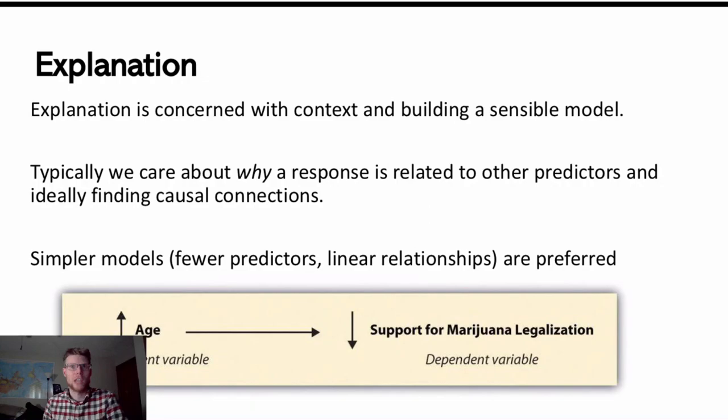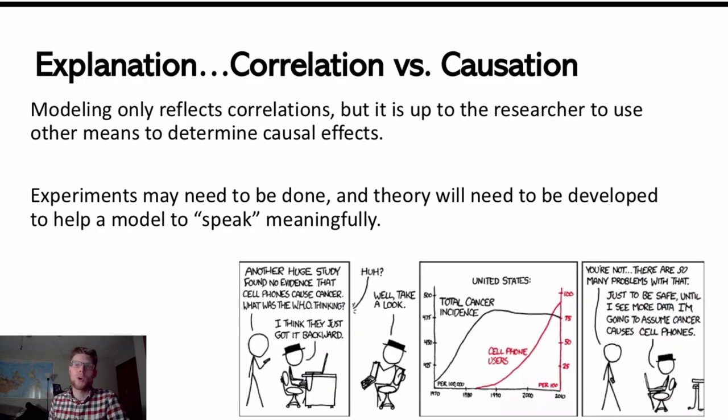As we think about building theory about how things relate, it gets into this conversation of correlation versus causation. Correlation is just noticing that two variables relate to one another. If we know something about one, we might be able to make predictions about the other. But to go that extra step of causation, that's a little bit more specific. It's actually recognizing one variable directly causing changes in the other. That is something we would have to discern if we have done an experiment or if we have the appropriate theory to back up the data.